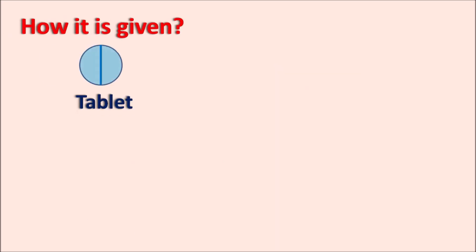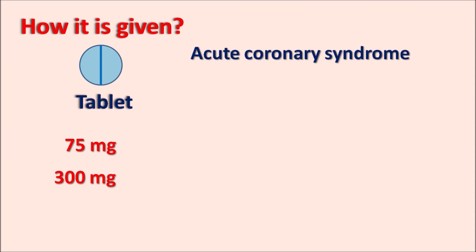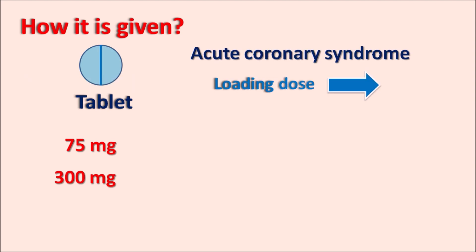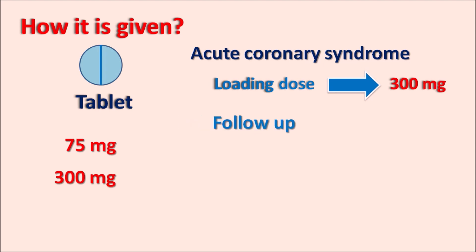Clopidogrel is given in tablet form and is available in two doses — 75 mg and 300 mg. For acute coronary syndrome, the drug is given at a loading dose of 300 mg as a single dose, followed by a maintenance dose of 75 mg once daily.